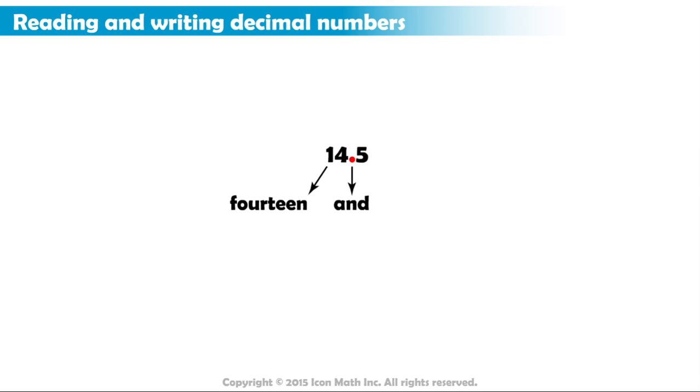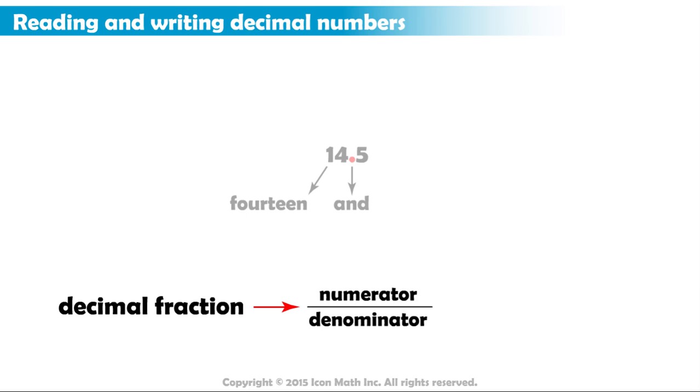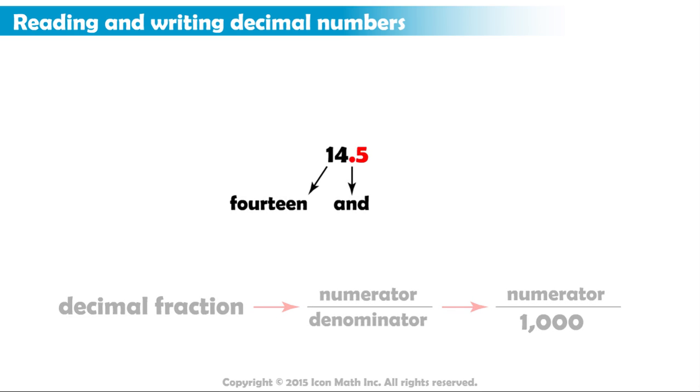To read a decimal, we can first think of it as a decimal fraction, with a numerator and a denominator. A decimal fraction is a special kind of fraction. Its denominator is always a power of 10. To find out which power of 10 we have, count the number of decimals in left to right order. However, ignore any zeros at the end that are not followed by a non-zero digit. In this case, we only have one digit in the first decimal place, 5. So the denominator is 10 to the power of 1, or just 10.